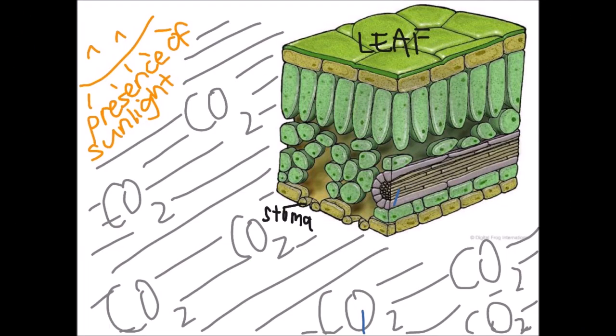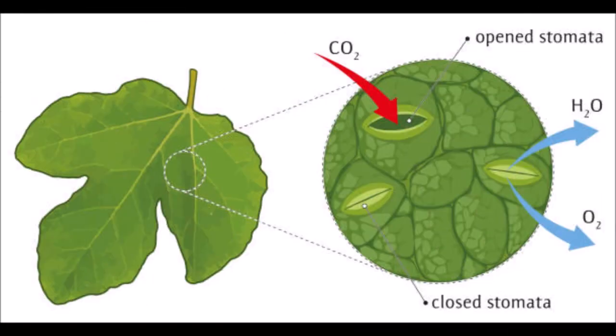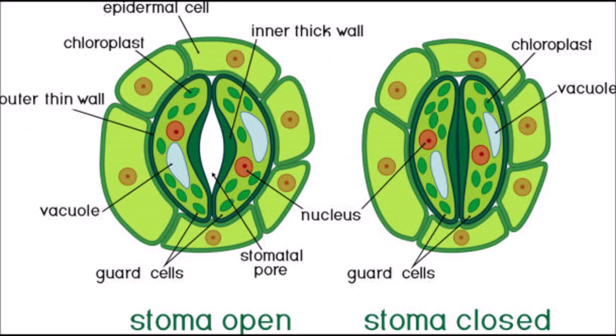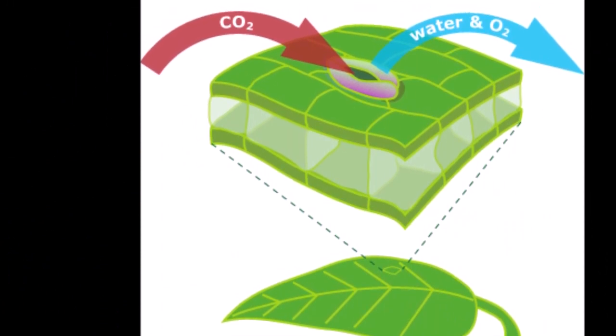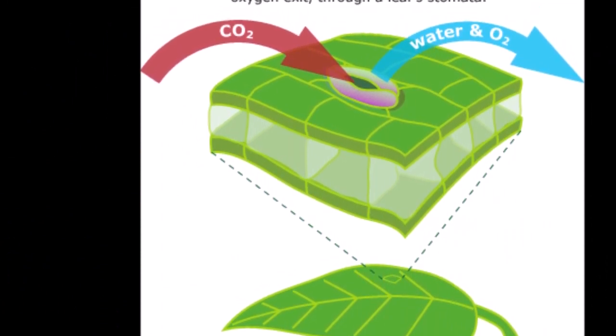The next component of food is carbon dioxide. Carbon dioxide enters the leaf of a plant through small pores called stomata. When the guard cells open the stomata, the carbon dioxide enters into the plant and the process of preparing food begins. During this process, the plant combines carbon dioxide and water in the chloroplast cell in the presence of sunlight.